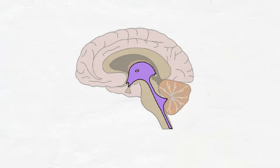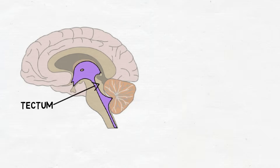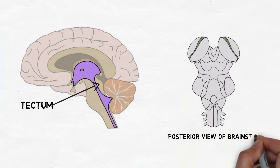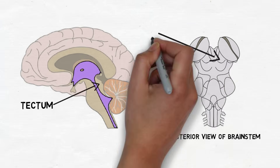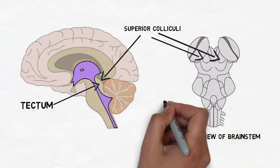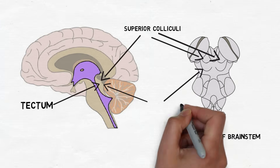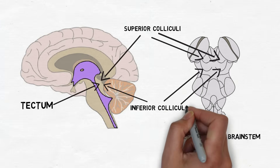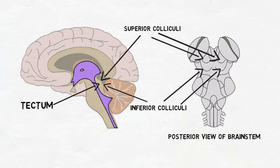The tectum primarily consists of the superior and inferior colliculi, clusters of neurons that together form four bumps on the posterior surface of the brainstem. The superior colliculi are thought to be involved with directing behavioral responses towards stimuli in the environment, while the inferior colliculi are known for their role in auditory processing.